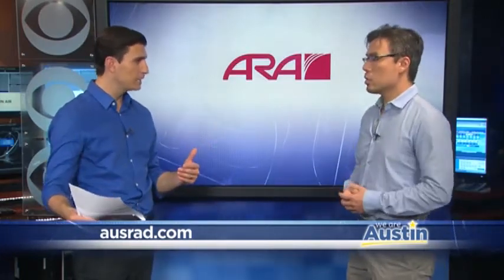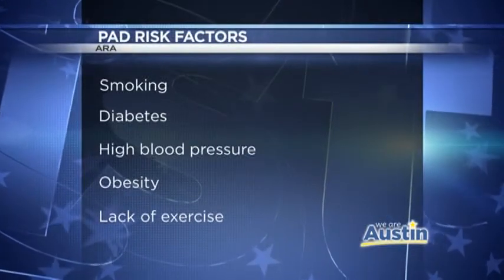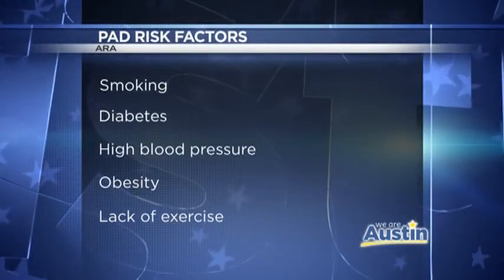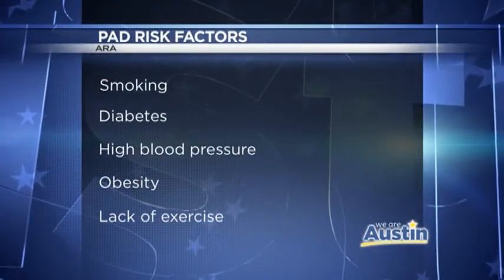Some patients may progress to the point where you have to consider amputation. This would happen a bit later in life. As you get older, the risk factors that contribute — smoking, poorly controlled diabetes, age — as those progress, these symptoms can progress further and further and get worse and worse.